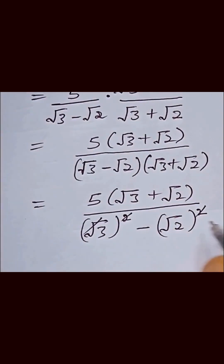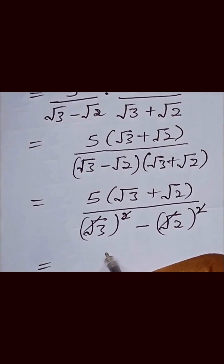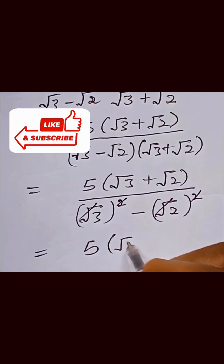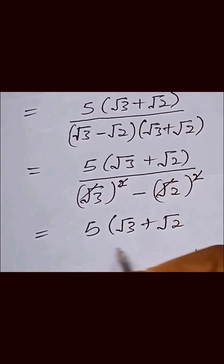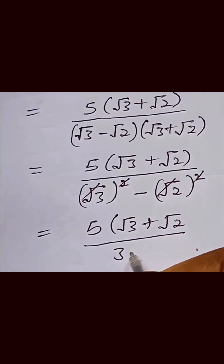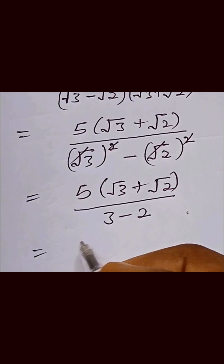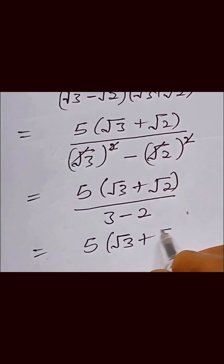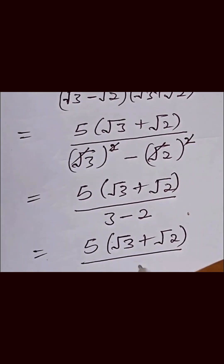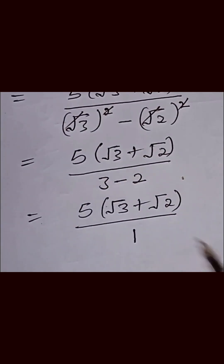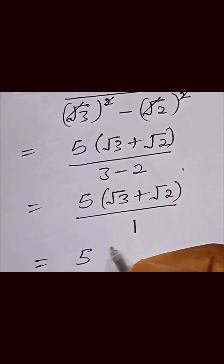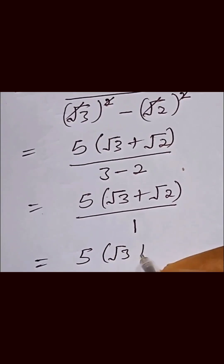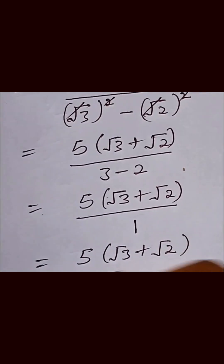So this becomes: this can cancel out this, and we are left with 5 into bracket square root of 3 plus square root of 2, over 3 minus 2. So from here, this gives us 5 into bracket square root of 3 plus square root of 2 over 1, which can be written as 5 into bracket square root of 3 plus square root of 2, which is the final answer.